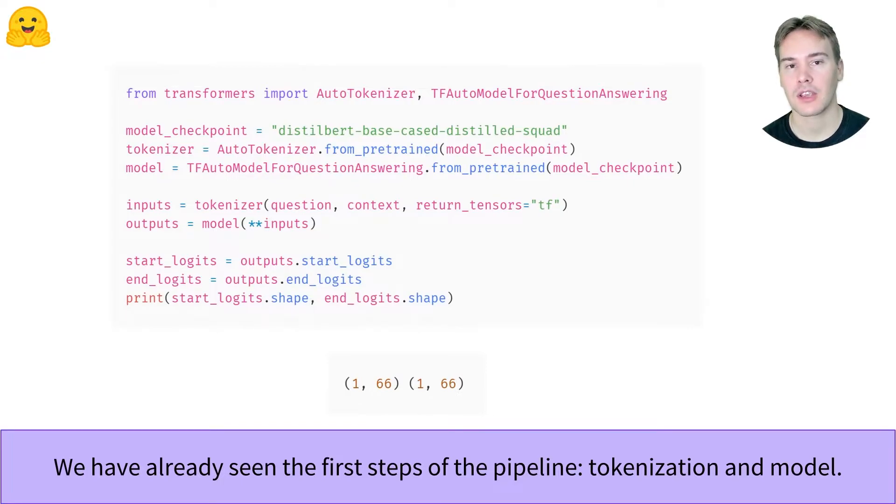But one key difference with text classification is that our model outputs two tensors named start logit and end logit. Why is that? Well, this is the way the model finds the answer to the question.